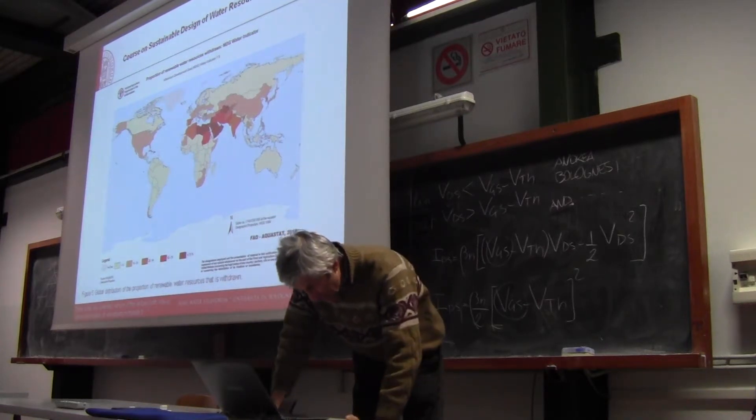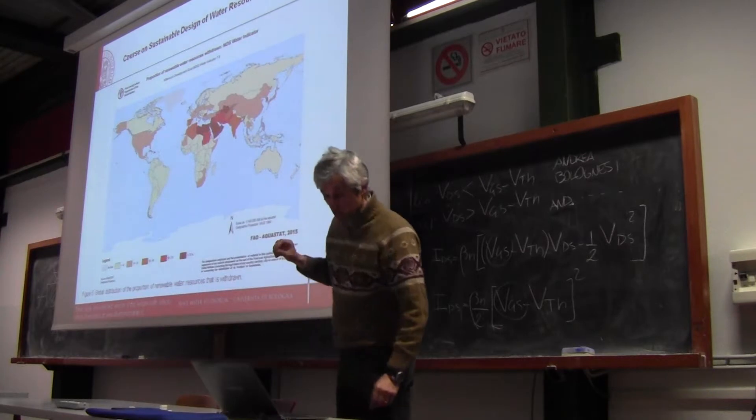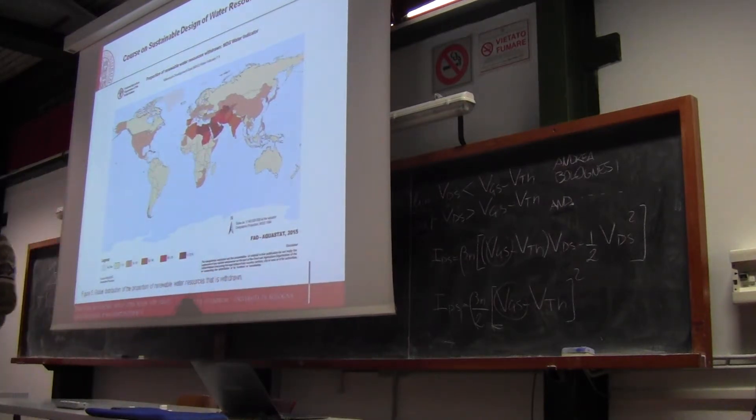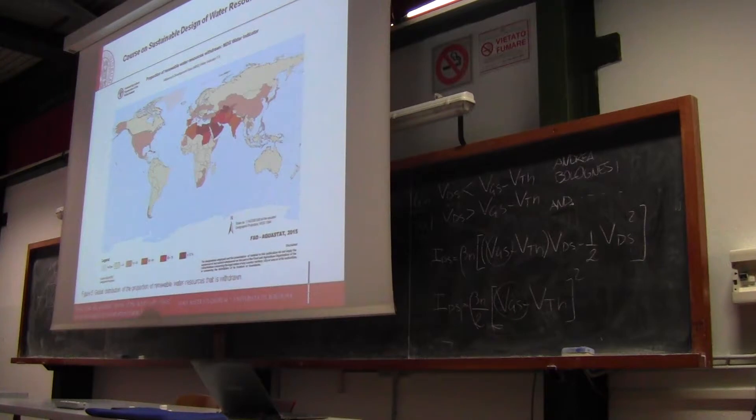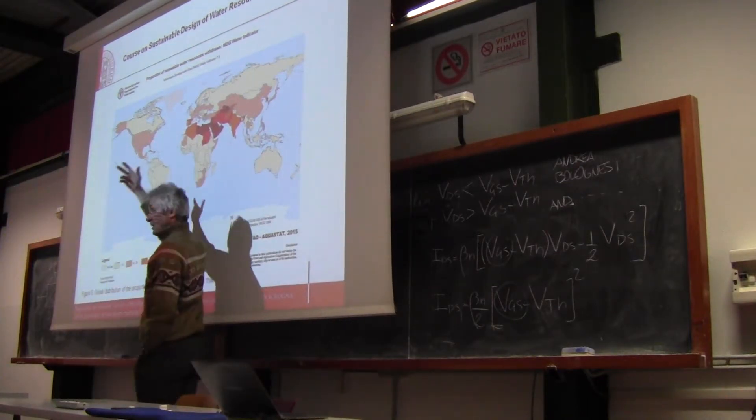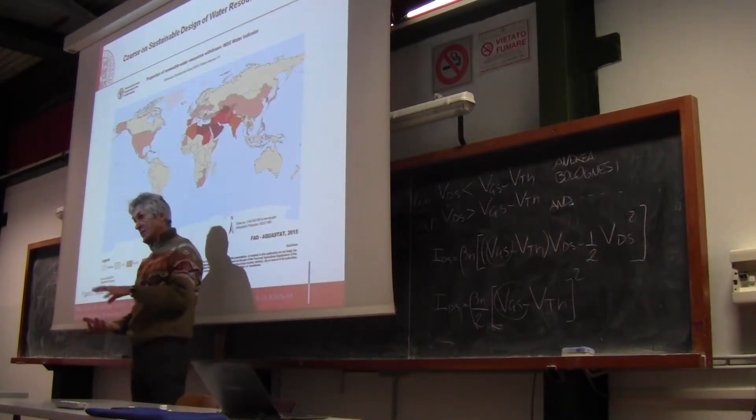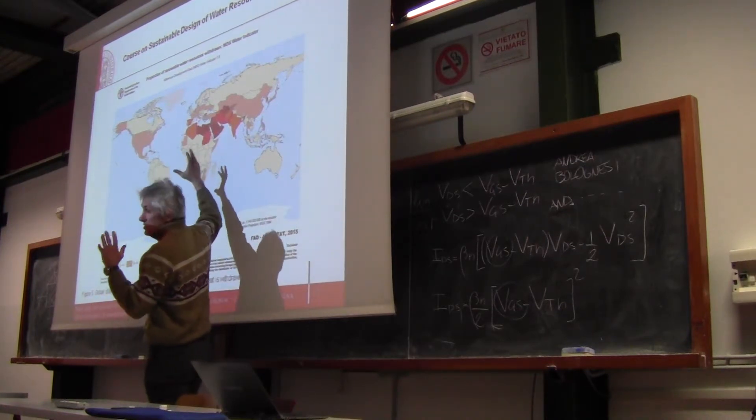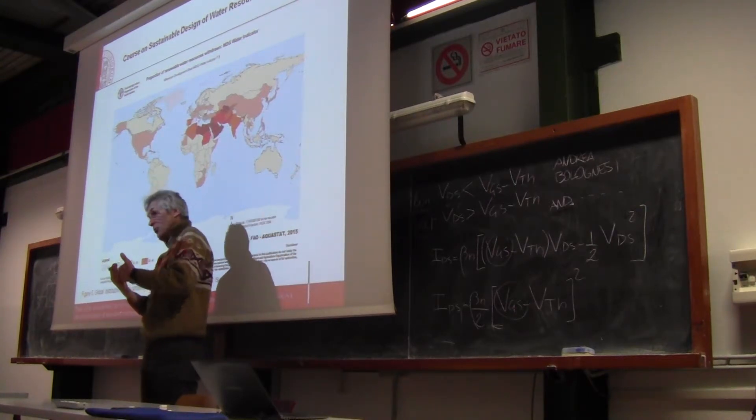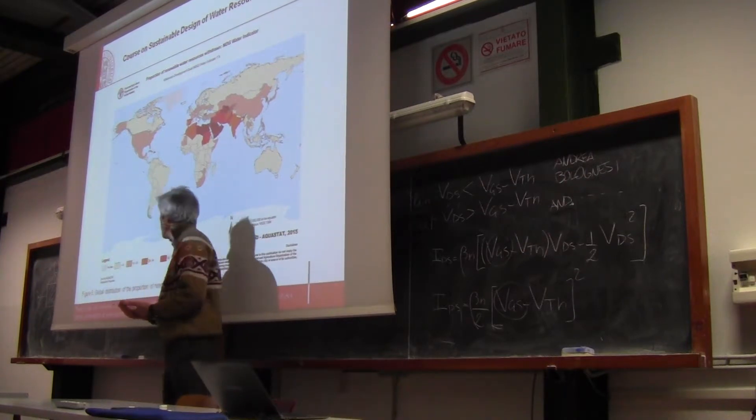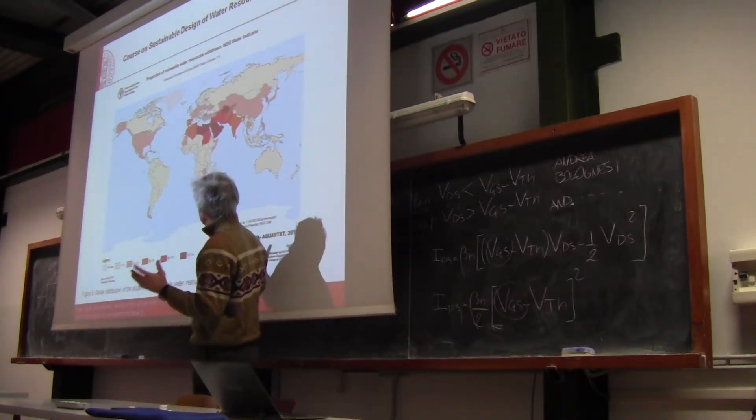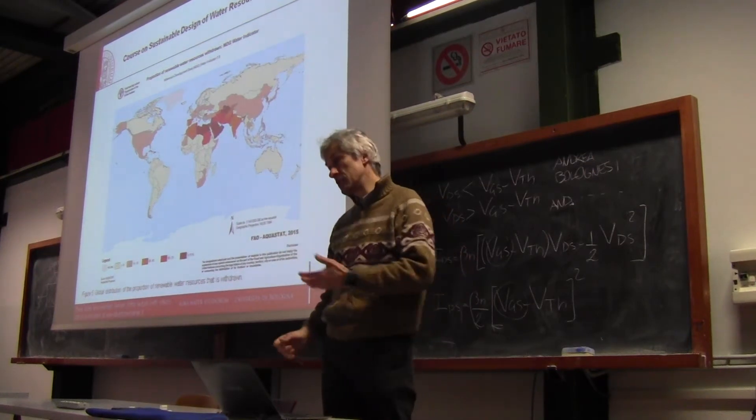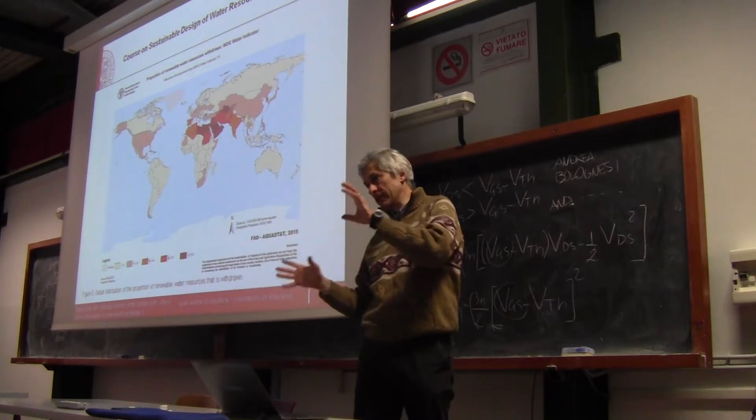And this is instead the global distribution of the proportional percentage of renewable water resources that is withdrawn. And you see that what you would expect, meaning that in the north of Africa you have few water resources, so the percentage that is withdrawn is almost close to 100%. But the same in Europe, not nearly the same, it's a little bit lower, but in Europe you have more water resources, but still we are withdrawing a lot. It means that where you see that it's red and brown, it means that we are already exploiting, using a lot of available water resources. This is also interesting because you can see where are the countries where there is more water scarcity.